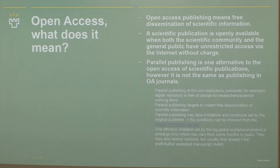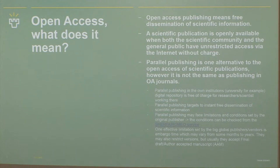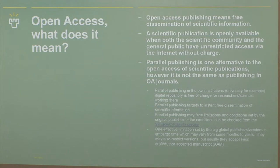What does Open Access mean — what is it? Simply put, Open Access Publishing means free dissemination of scientific information. A scientific publication is openly available when both the scientific community and the general public have unrestricted access via the Internet without charges.